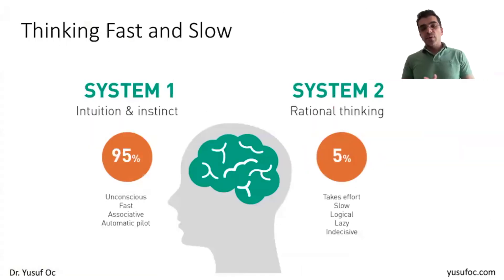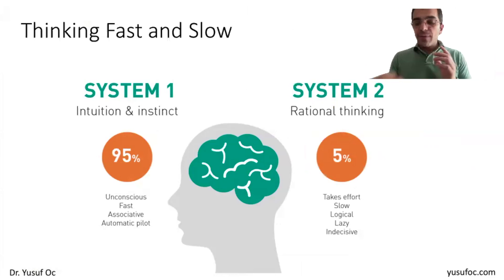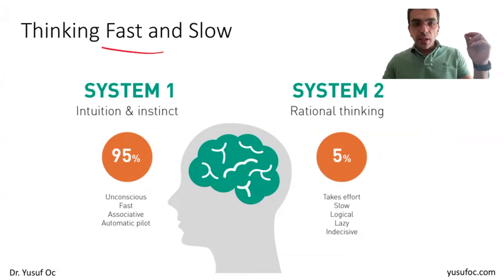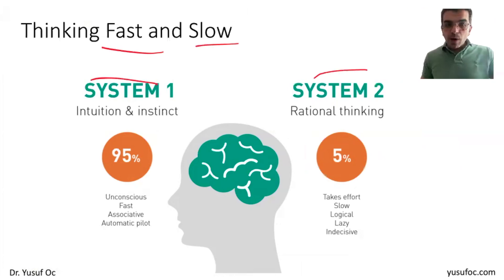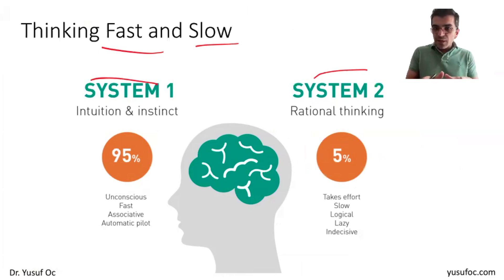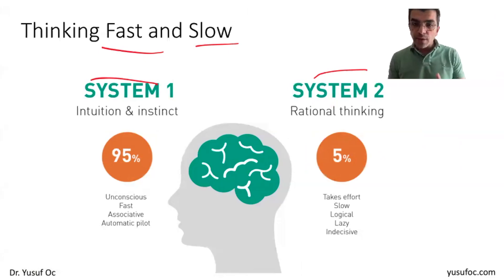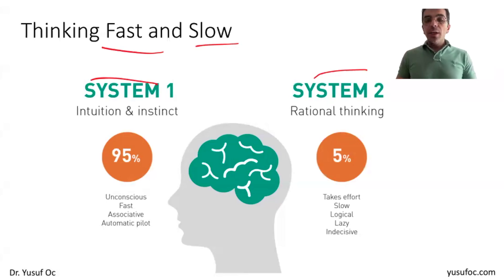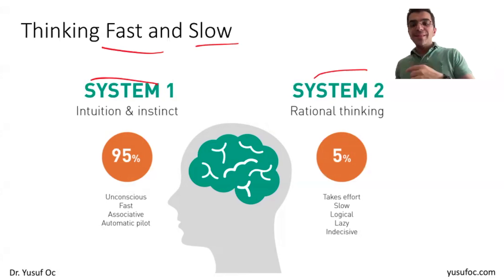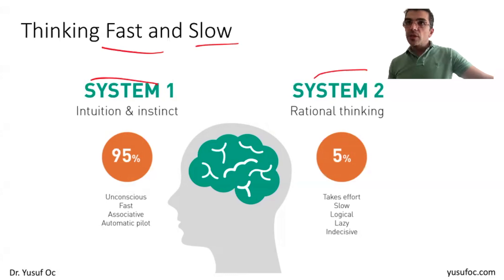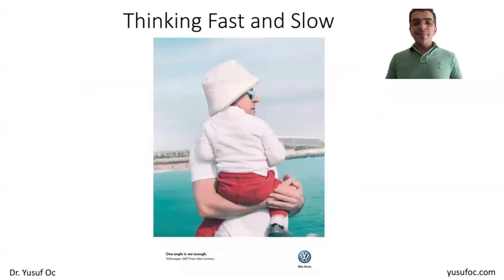In a nutshell, as the title of Kahneman's book states, we have fast thinking and slow thinking — System 1 and System 2. System 1 is intuitive and instinctive thinking; it accounts for about 95% of our thinking and is almost always on — whenever you see something, an answer comes to mind immediately. System 2 is rational thinking, which you activate when System 1 isn't enough. It takes more effort, more time, and more information.